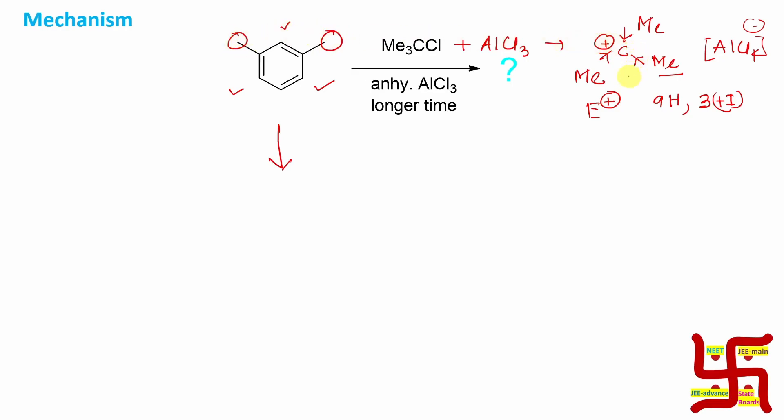Logically, if you think - this is also ortho, but two methyl groups are there, and tertiary butyl group is very bulky. So that's why aromatic electrophilic substitution will not occur here. It can either go here or this.